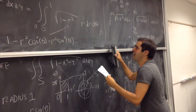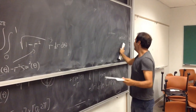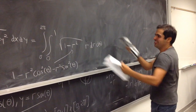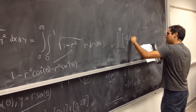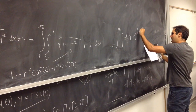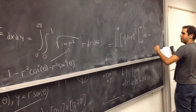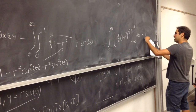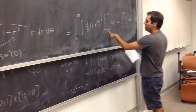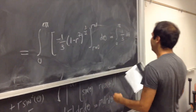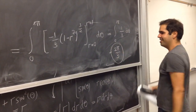We can evaluate this directly. The inner integral gives [−1/3 · (1 − r²)^(3/2)] from r = 0 to r = 1, which equals 1/3. So the full integral becomes the integral from 0 to 2π of 1/3 dθ, which equals 2π/3. That's all she wrote!